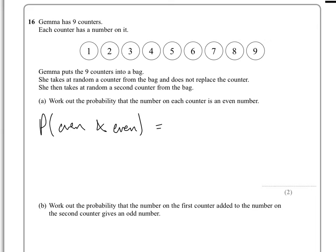So in the first go there is 1, 2, 3, 4 evens out of 9. And then on the next go, one of the evens will be gone and there will be one less overall counter as well of course.